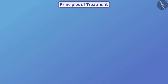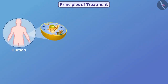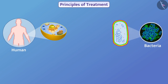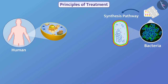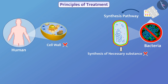For example, the processes in human cells and the processes in bacteria are different. Therefore, to kill the infectious bacteria, such medicines are used that only block the synthesis pathway of bacteria. Due to which, bacteria cannot synthesize the necessary substances for life, and therefore bacteria do not grow and die. For example, in the cells of humans there is no cell wall, so the process to synthesize the cell wall does not take place in humans.